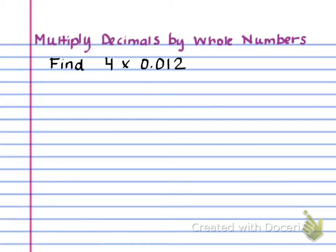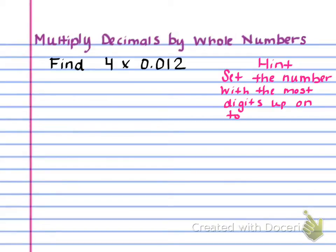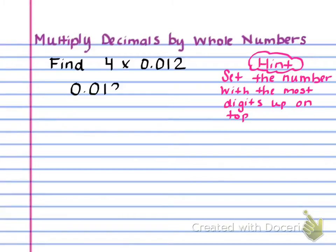Our next problem says find 4 times 0.012. I've written a helpful hint here: when you're multiplying decimals by whole numbers, you want to set the number with more digits on top — not necessarily the greater number, because we know 4 is greater than 0.012, but 0.012 has more numbers in it. The property that allows us to flip-flop those numbers is the commutative property of multiplication, because 4 times 6 is the same as 6 times 4, so the order doesn't matter. So we're going to write 0.012 on top and multiply it by 4.